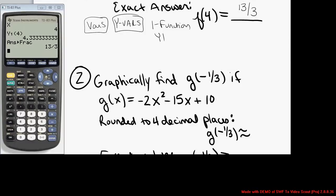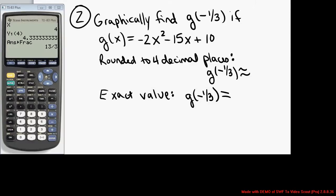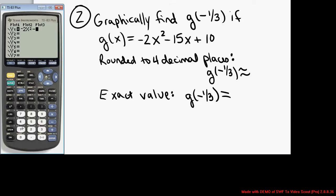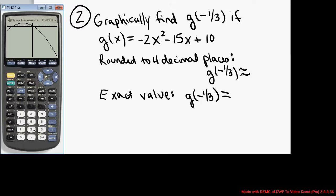In example number 2, we graphically find the value of g of negative one-third for the quadratic function g of x equals negative 2x squared minus 15x plus 10. I put the function in y1: negative 2x squared minus 15x plus 10. I select a window that allows me to see x equals negative one-third — x equals negative 10 up to x equals positive 10 would be fine. I hit zoom zero. It graphs it, and this will allow me to see x equals negative one-third.